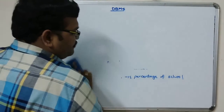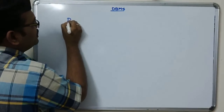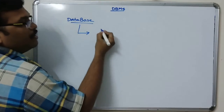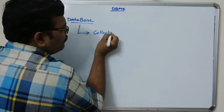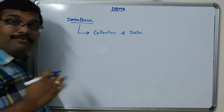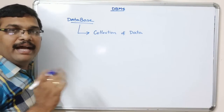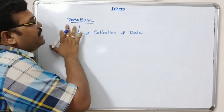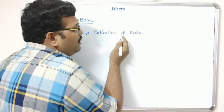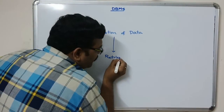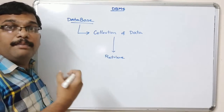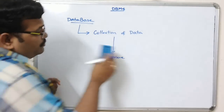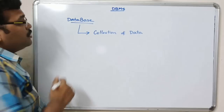Our subject is DBMS — database. So what is meant by database? Database means a collection of data. The database will be very large, and from that database we have to retrieve the data. This database holds a large amount of data, and from this data we retrieve based on some processing. This is called a database — a collection of data.